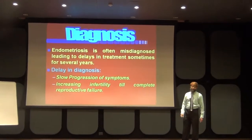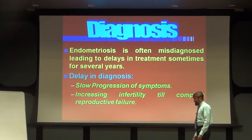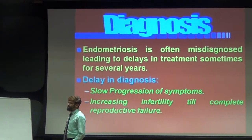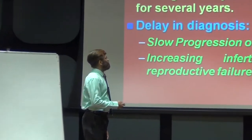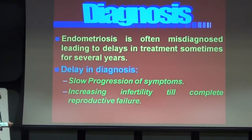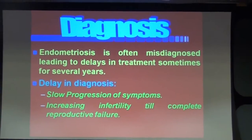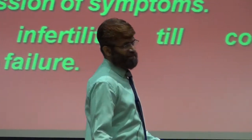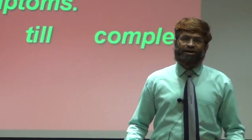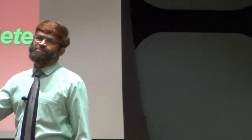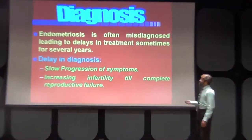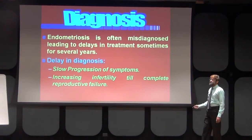Next is diagnosis. Endometriosis is often misdiagnosed, leading to delays in treatment — sometimes for several years. The reason is delay in diagnosis because endometriosis is observed as a disease of the affluent — rich people who probably delay their pregnancies into their thirties or forties, leading to endometriosis. Delay in diagnosis occurs because of slow progression of symptoms and increasing infertility until complete reproductive failure.